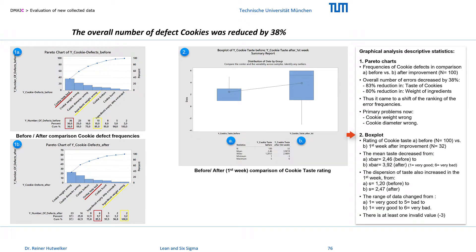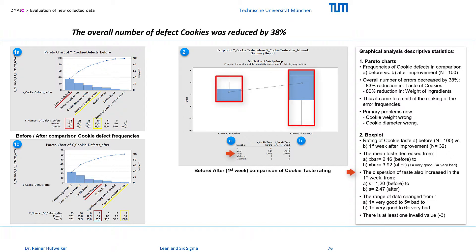The box plot compares the rating data before improvement with data from the first week after improvement. It is shown that the mean taste even increased from X̄ 2.46 to X̄ 3.92, meaning that the taste decreased. The dispersion of taste also increased from S 1.20 to S 2.47.